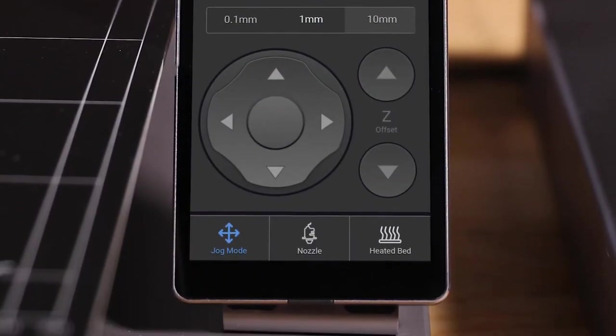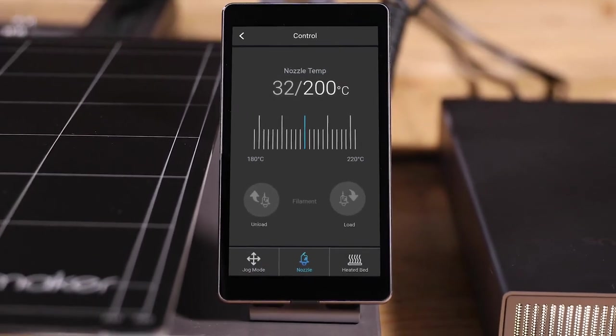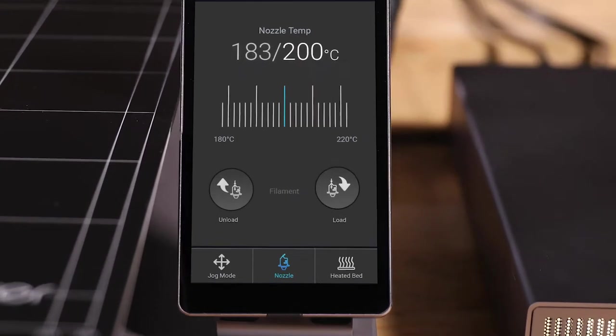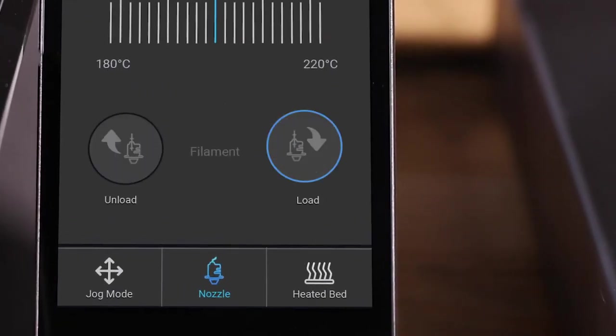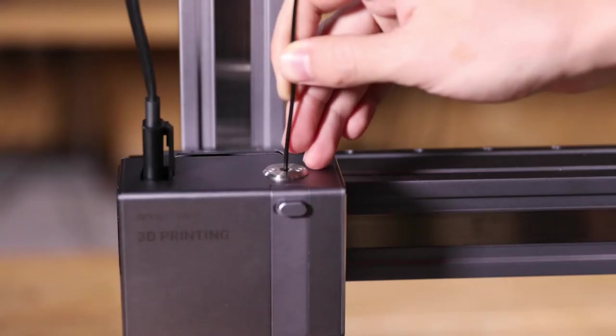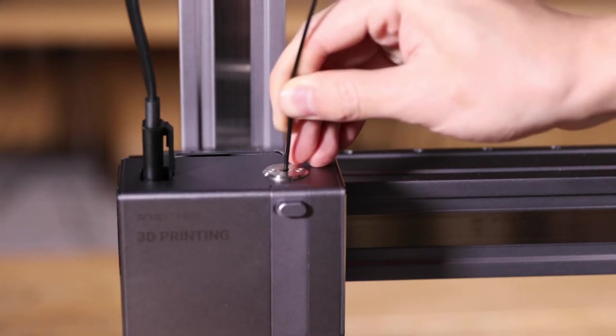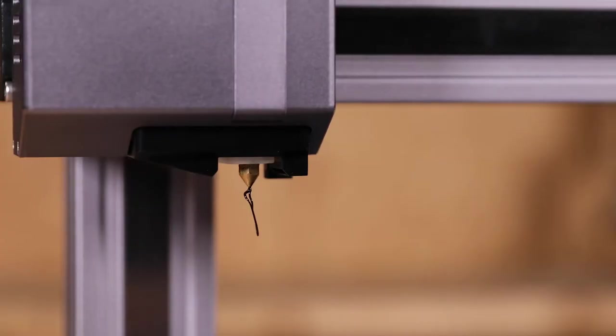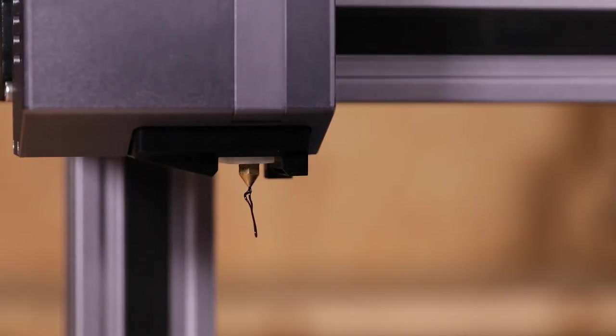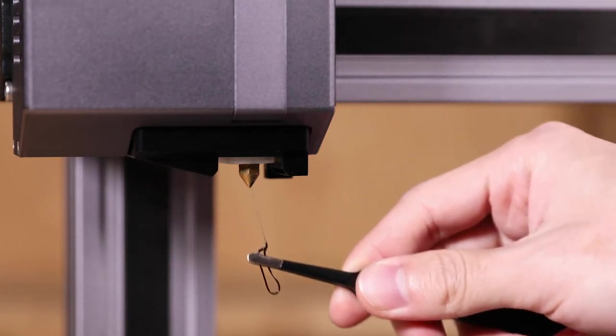Enter the Control page. Choose Nozzle tab. And the nozzle will be heated to the preset temperature. Tap Load when it finishes heating. And gently push the filament into the 3D printing module until you feel the motor pulling the filament in. Filament squeezed out of the nozzle means a successful loading.